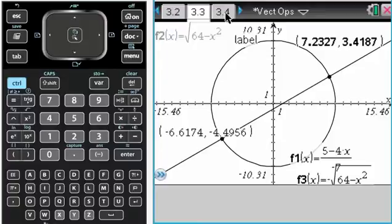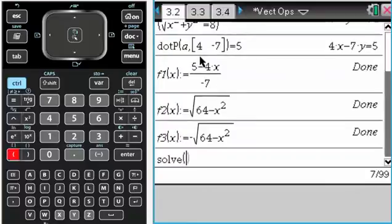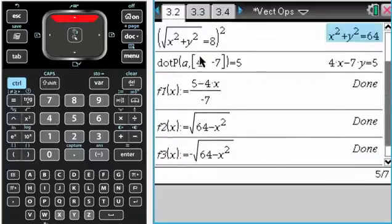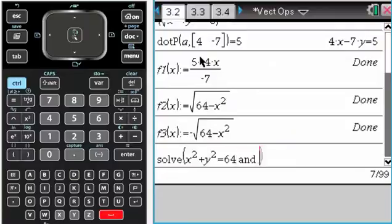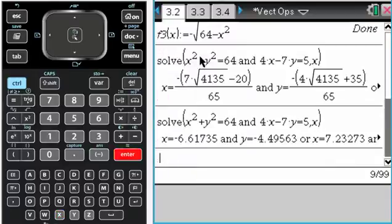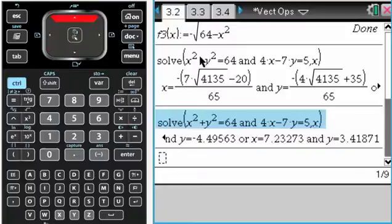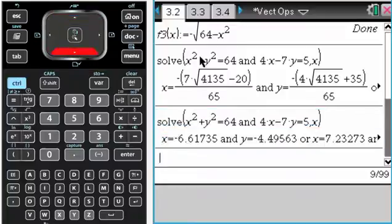If I had a CAS, which I do, I would actually go back to this page and do solve, arrow up to get this, type and arrow up to get this, comma, X to tell it what to solve for. And then Ctrl-Enter, and it actually gives me both ordered pairs without doing the graphing thing. But it'll work no matter what calculator you have, so I hope that is helpful.